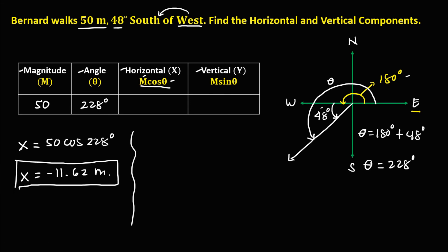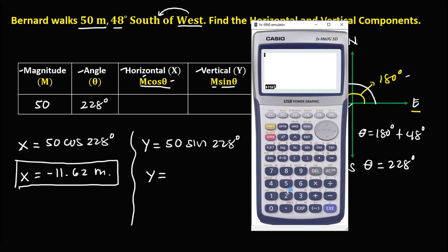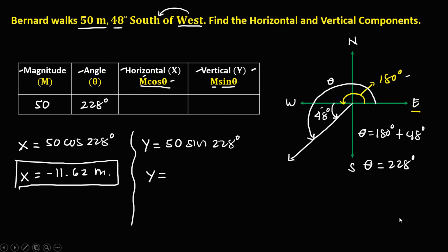And for the vertical component, that's y. So y equals, so we have the magnitude 50 and sine theta, so sine 228 degrees. So to solve now for the vertical component or y, so we have 50 then sine 228 equals that's 48.63. So we have 48.63 meters. So these are now the horizontal and the vertical components.